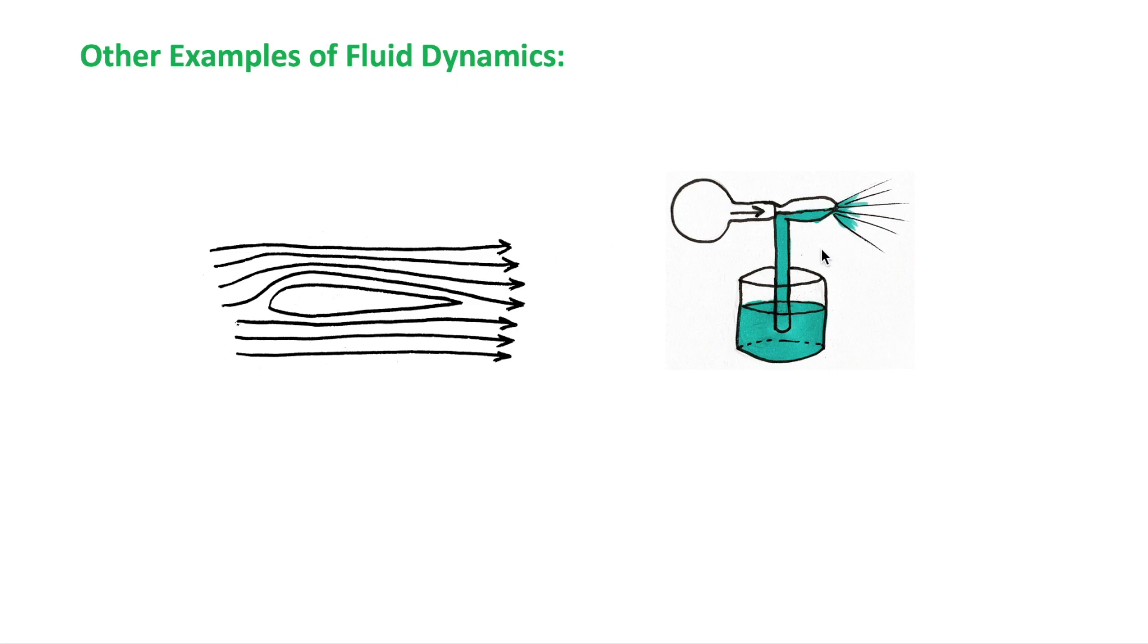Another example is the atomizer used in sprays such as perfumes. So, a stream of air above the tube will reduce the pressure there. This will cause the liquid to rise upward where it then disperse into fine droplets.